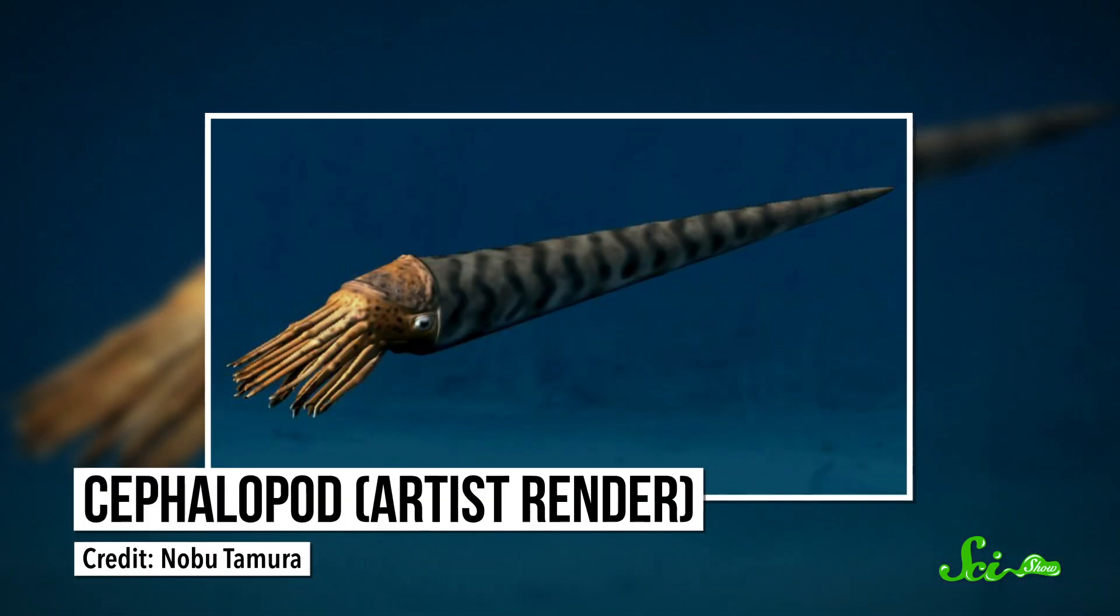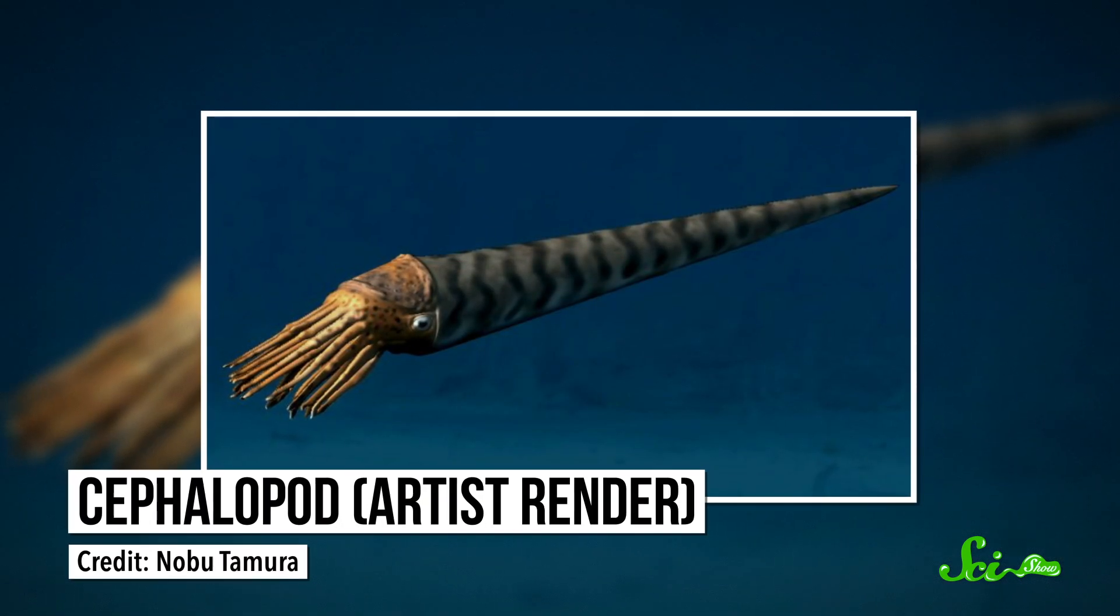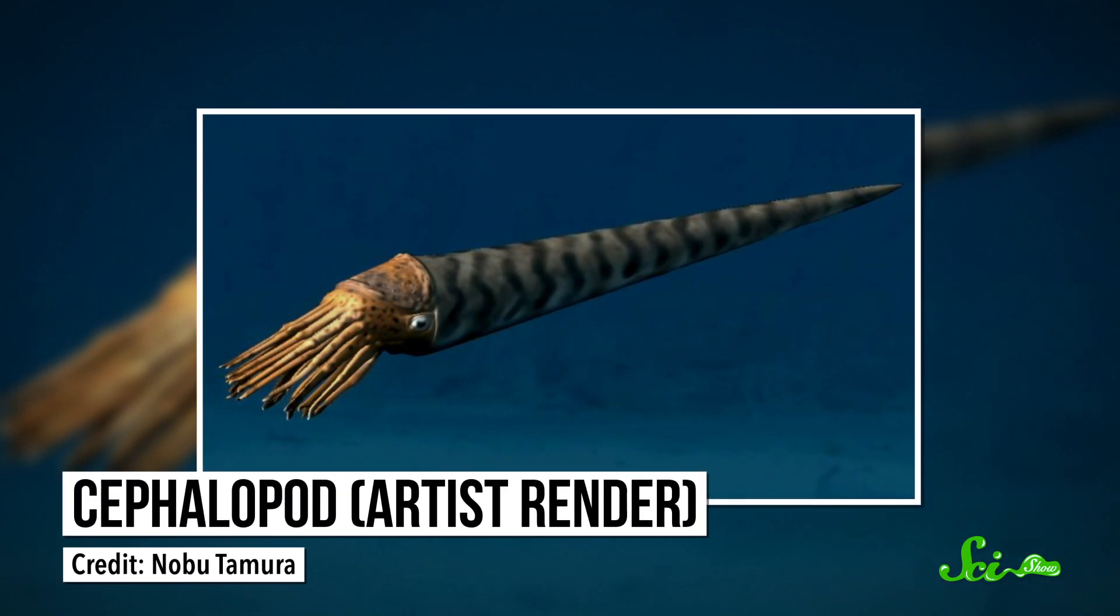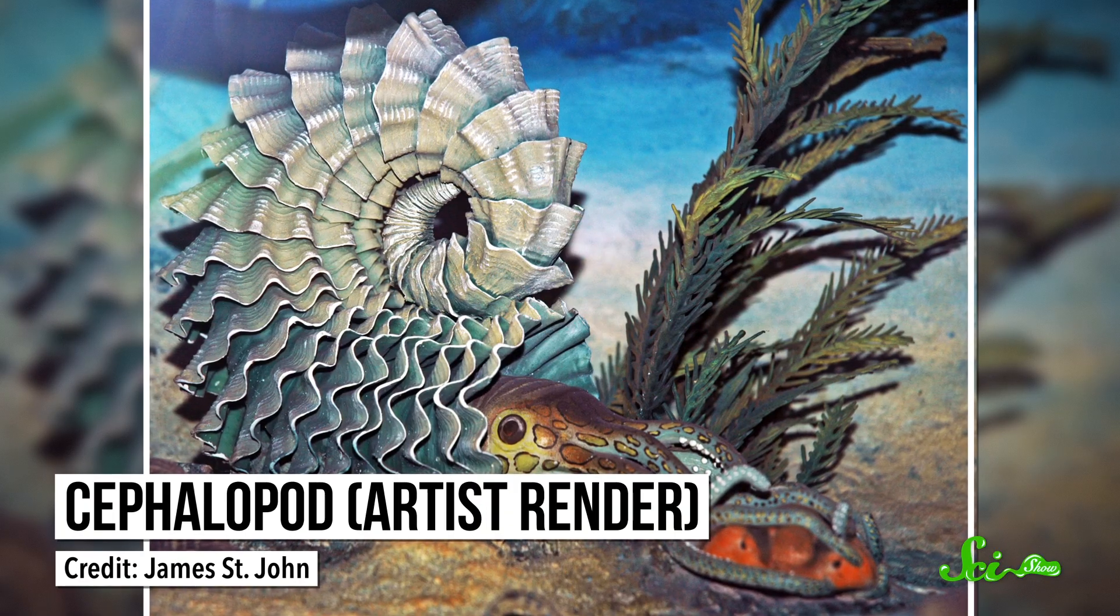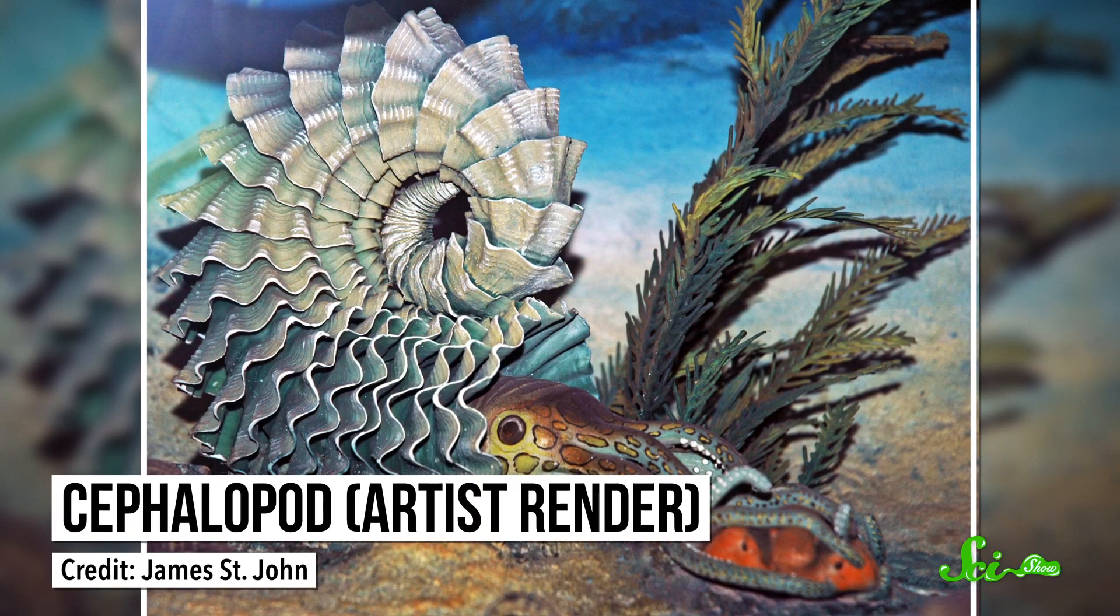Meanwhile, swimming around in the ocean water, there were the age's predators du jour — nautiloid cephalopods. These were the ancient relatives of modern octopuses and squids, although these guys had shells either coiled like a snail or straight like a giant toothpick.